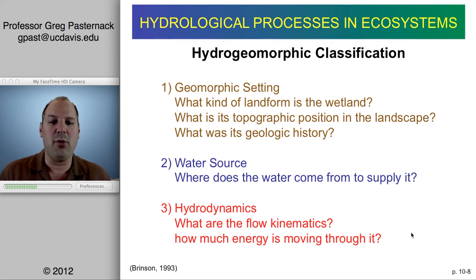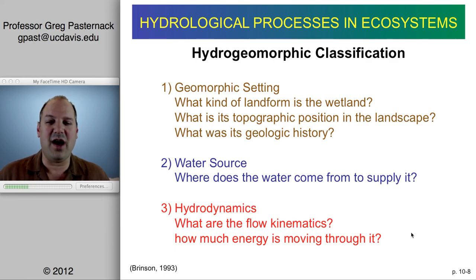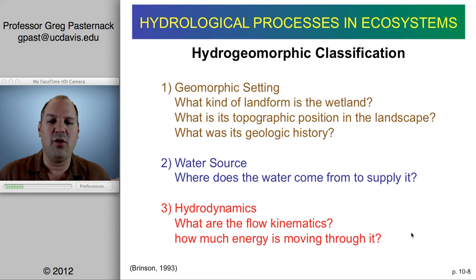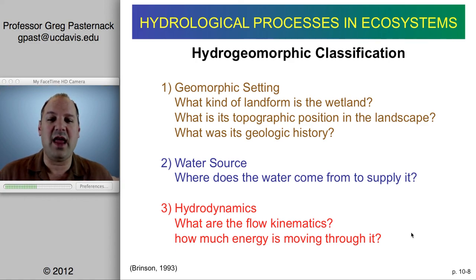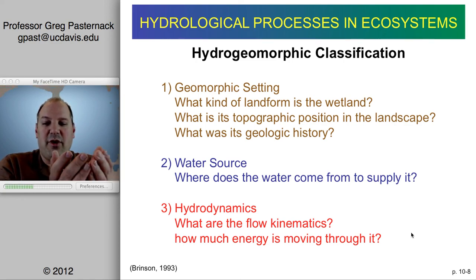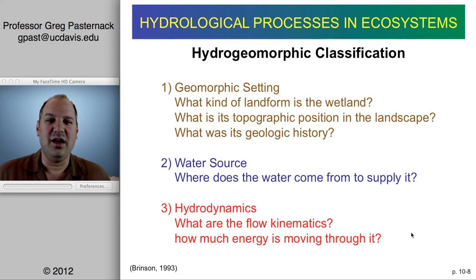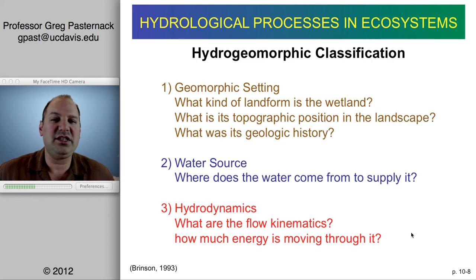The first is what we call geomorphic setting — probably a word I've used before in this class, meaning what's happening on the surface of the earth or how the surface is changing. The simplest thing is just what's the shape of the land where the wetland is located — the landform. That shape could be like a bowl, a depression, on a side slope, or just a big flat area that gets wet sometimes.